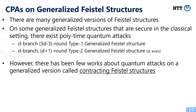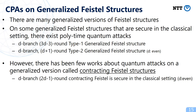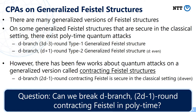Please note that in this talk, all attacks are chosen plaintext attacks, both in classical and quantum settings. In the classical setting, a previous work claims that the D-branch 2D-1 round contracting Feistel is secure classically — with the condition that D must be even, since if D is odd the contracting Feistel structure can never be pseudo-random. The natural question is: can we break the D-branch 2D-1 round contracting Feistel structure in polynomial time with chosen plaintext attacks? This is the starting point of our research.